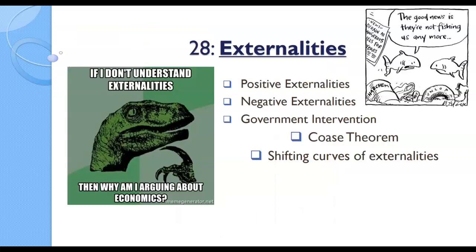Today we talked about positive and negative externalities, government intervention and the Coase Theorem, and shifting the curves of externalities. Hopefully this is making sense. Until next time, bye.